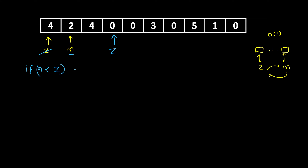So whenever n is less than z, we initialize n equal to z plus one, so we move n right past z immediately. We then advance n until we find a non-zero element. Once we have a zero index z and a non-zero index n greater than z, we swap them — so, for example, three comes to the z position and zero goes where three was.